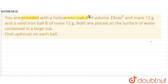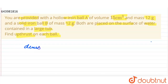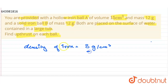You are provided with a hollow iron ball A of volume 15 cm³ and mass 12 grams, and a solid iron ball B of mass 12 grams. Both are placed on the surface of water contained in a large tub. Find the upthrust on each. The density of iron is roughly 8 g/cm³ and the density of water is 1 g/cm³.